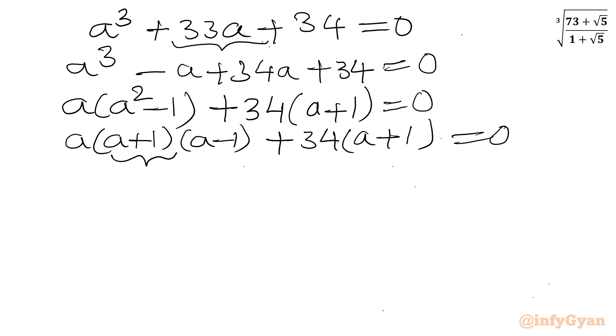Now a plus 1, a plus 1, overall common. So I can write a plus 1 times a square minus a plus 34 equal to 0. So from here we can conclude either a plus 1 will be equal to 0,